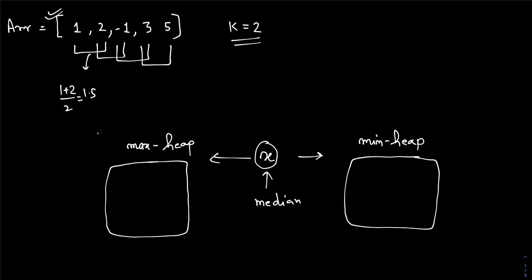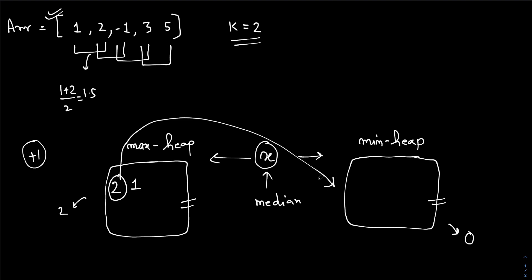The first element is 1, so I pushed 1 inside the maximum heap and 2 inside the other heap. Now you can see the size difference between this heap and the other heap is greater than 1 — the size of this one is 2 and this one is 0. From my previous video, the size should be approximately the same, with a maximum difference of 1. So what I'll do is push the top element of the maximum heap into my minimum heap.